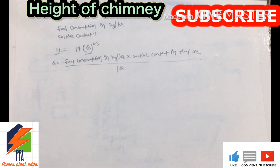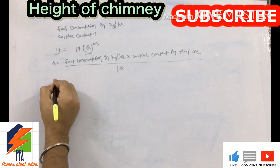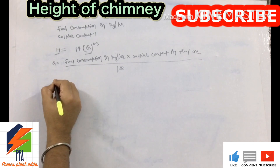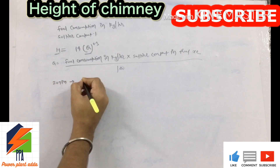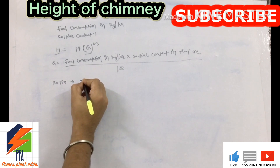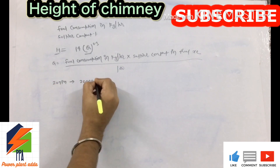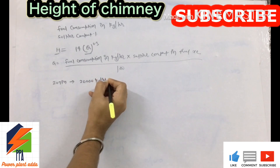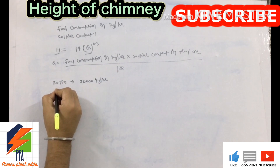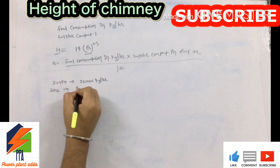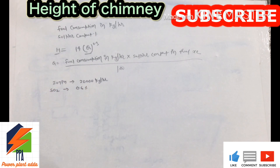Now let's do an example. Assume fuel consumption is 20,000 kg per hour, and assume sulfur content is 0.6%. Now let's put these values into the formula.